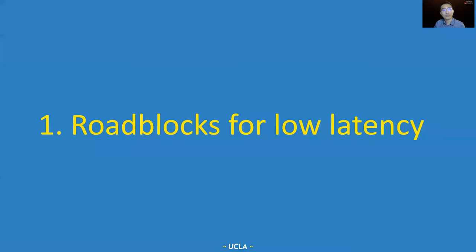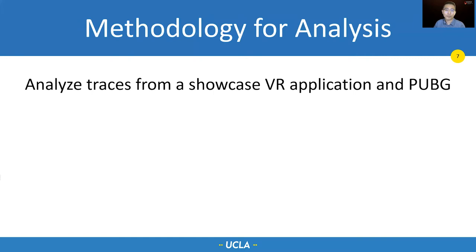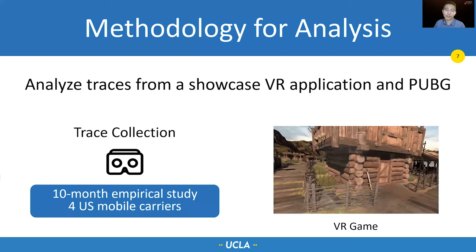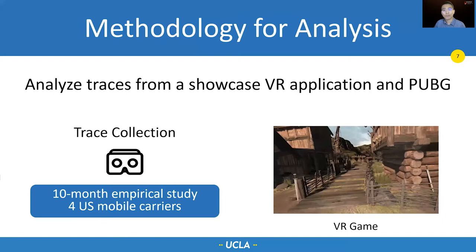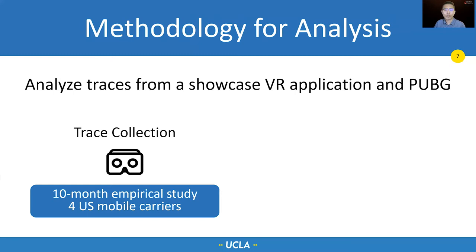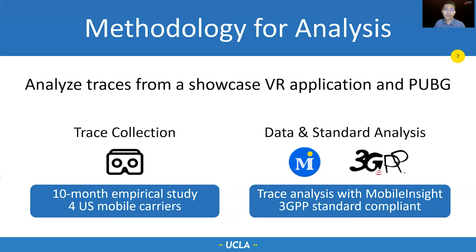Let's start with the first question: what are the roadblocks? We take a two-step approach. We first build a showcase mobile VR application. It uploads the user motion — basically your head movement — to the cloud server, which renders the video frames and streams them back to a headset. We collect logs from this VR application and one popular mobile gaming application, PUBG. We have logs that cover four operational networks for 10 months. After that, we use MobileInsight to decompose the network latencies into elements and quantify them. To understand the behaviors, we also analyze 3GPP standards.